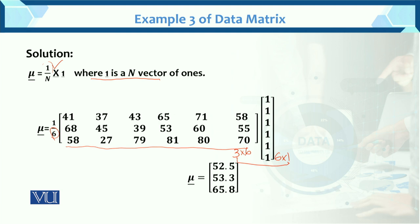To find the mean, take mu = (1/n) · X · 1. For the first row: 41 × 1 + 37 × 1 + ... divided by 6 gives mu_1 = 52.5. For the second row: 68 × 1 + 65 × 1 + ... divided by 6 gives mu_2 = 53.3. Similarly for the last row divided by 6, giving mu_3. This is the mean vector found using the direct formula with rows as variables.